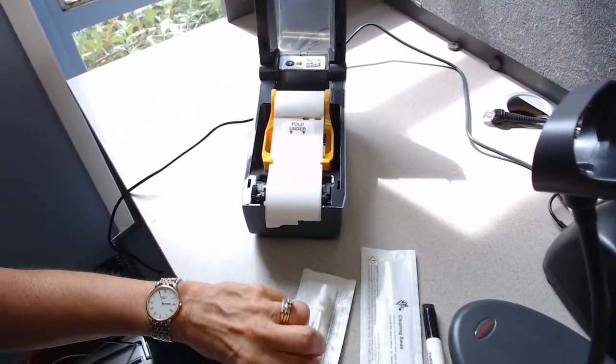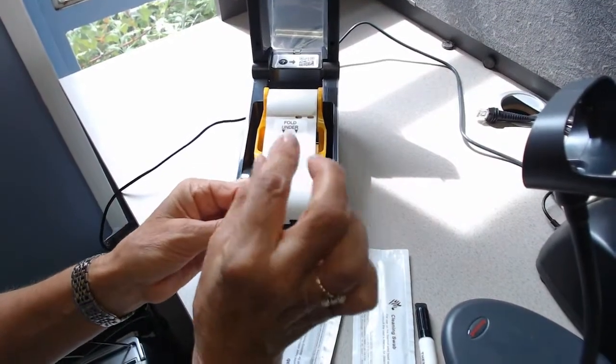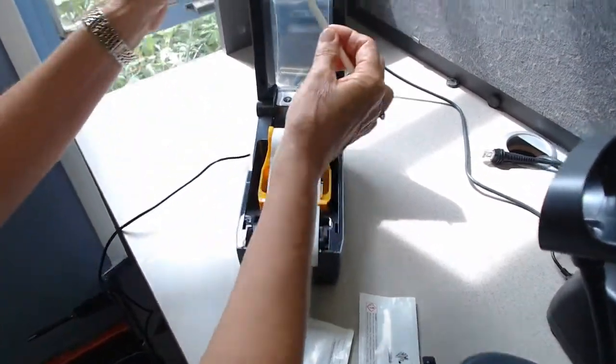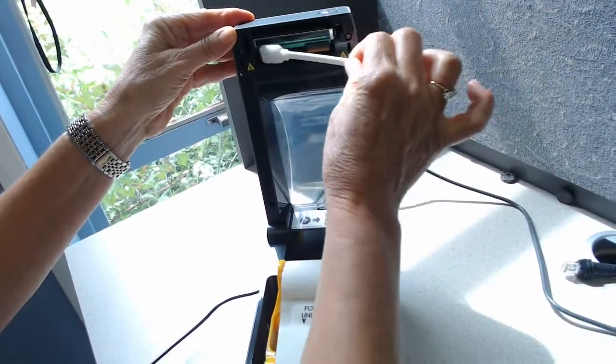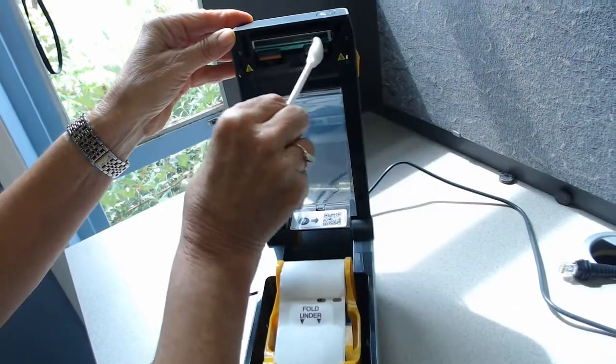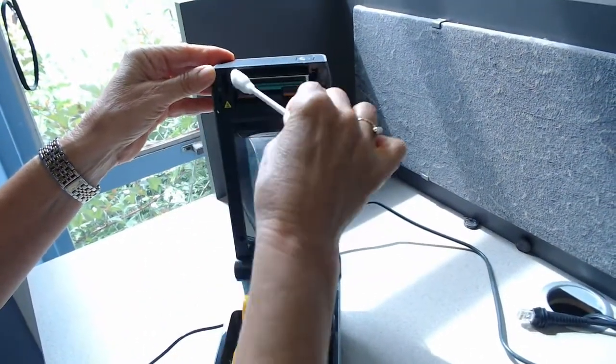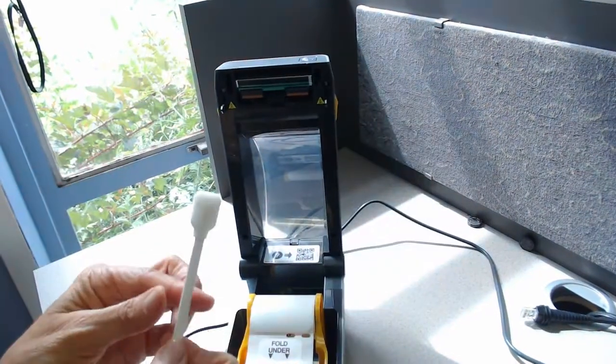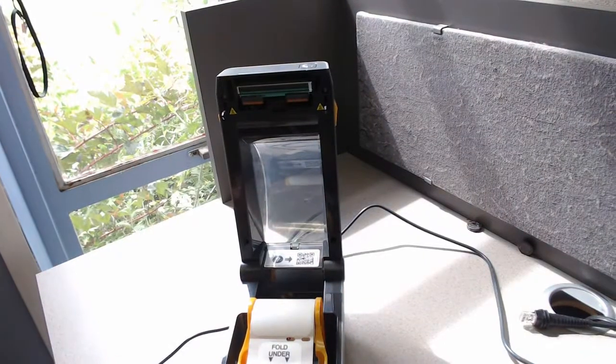So the cleaning swab is a little sponge and it has isopropyl alcohol on the end. This is going to be used to clean the print head. If this was really dirty, this would be full of blackish reddish residue on here. But we've tried to keep this printer very clean.